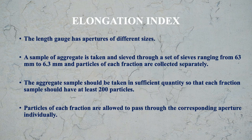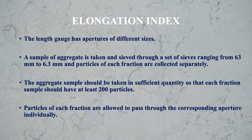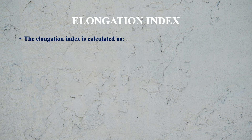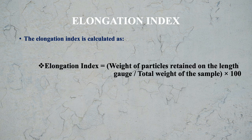The length gauge has apertures of different sizes. A sample of aggregate is taken and sieved through a set of sieves ranging from 63mm to 6.3mm and particles of each fraction are collected separately. The aggregate sample should be taken in sufficient quantity so that each fraction has at least 200 particles. Particles of each fraction are allowed to pass through the corresponding aperture individually.